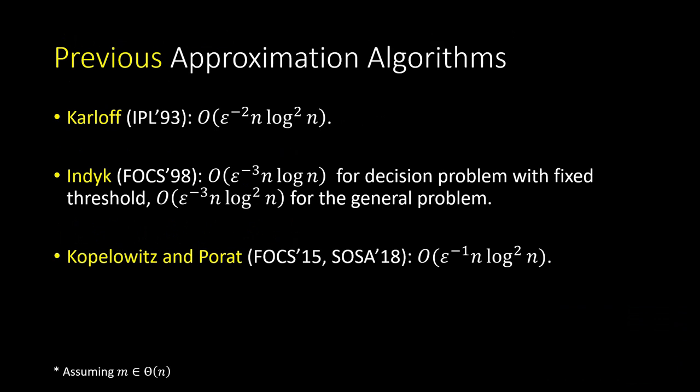Let's look at previous algorithms for this problem. The first algorithm, introduced in the early 90s by Karloff, has running time O(epsilon^{-2} * n * log^2 m). Then Piotr Indyk introduced another approach achieving a slightly better running time for the decision problem and a slightly worse running time for the general problem. Recently, Koplovich and Porat introduced a new algorithm with better epsilon dependence and a total running time of epsilon^{-1} * n * log^2 n. The common strategy for all these algorithms is to project the alphabet to a small alphabet and then compute many convolutions using FFT, yielding O(n log^2 n) when epsilon is constant.